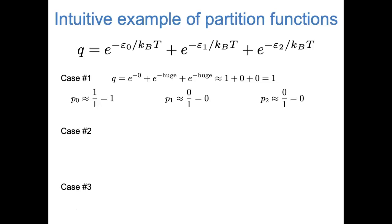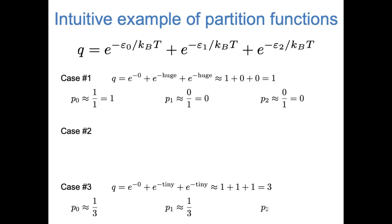At the other end of the spectrum is case three. Again, the first term of the partition function equals one. But in case three, the excited state energies are really, really small compared to kBT, so the second and third terms are e raised to the power of very small negative numbers, which approach e to the zero, which is one. The partition function is therefore the sum of three terms that all approach one, so the partition function approaches three. The probability that each state is occupied is each individual Boltzmann factor divided by three, and each of those approaches one-third — just as expected.